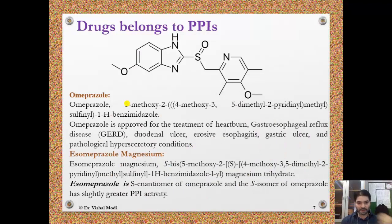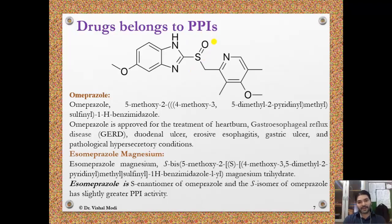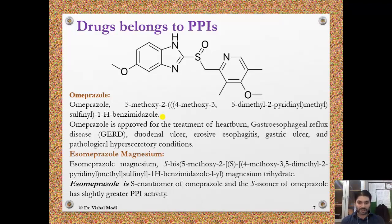Drugs belonging to proton pump inhibitors: omeprazole. All drugs in the proton pump inhibitor group share a common structure — the benzimidazole nucleus with a sulfoxide connection. The IUPAC name of omeprazole is 5-methoxy-2-[(4-methoxy-3,5-dimethyl-2-pyridyl)methylsulfinyl]-1H-benzimidazole. Omeprazole is approved for treatment of heartburn, gastroesophageal reflux disease (GERD), duodenal ulcer, erosive esophagitis, gastric ulcer, and pathological hypersecretory conditions.